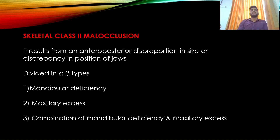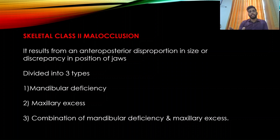Skeletal Class 2 malocclusion results from an anteroposterior disproportion in size or discrepancy in position of the jaws. It is divided into three types: mandibular deficiency (retrognathic mandible with orthognathic maxilla), maxillary excess (prognathic maxilla with normal mandible), and a combination of both — maxillary prognathism with mandibular retrognathism.